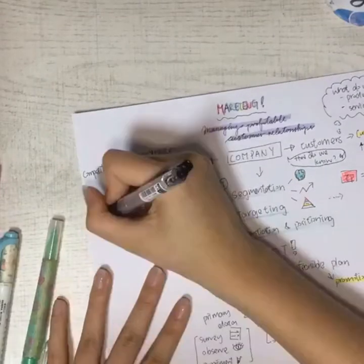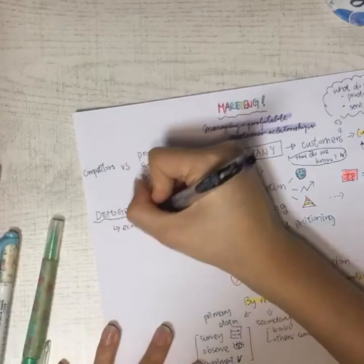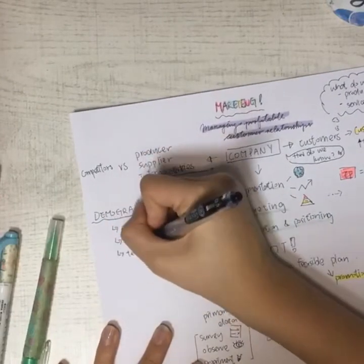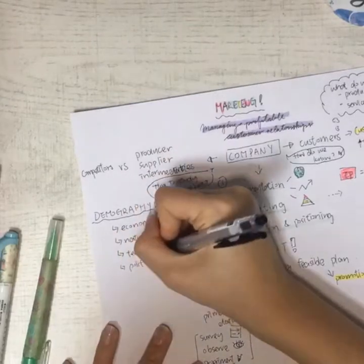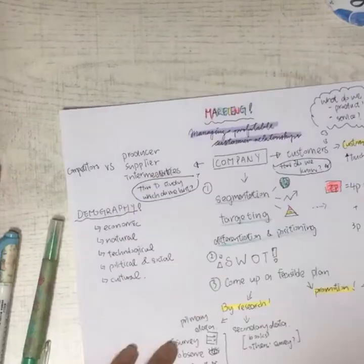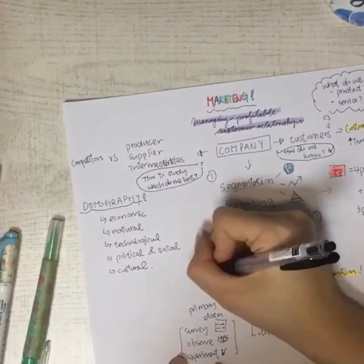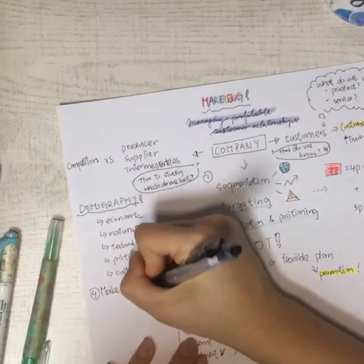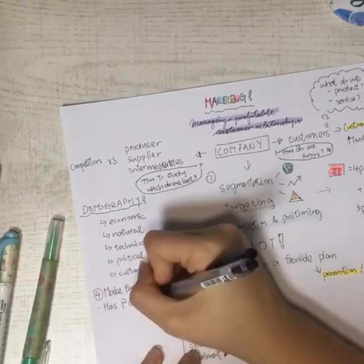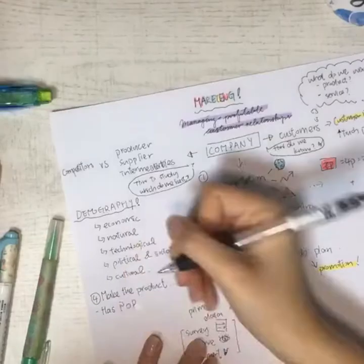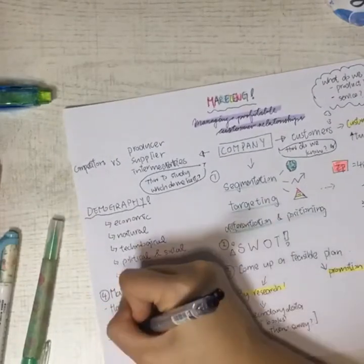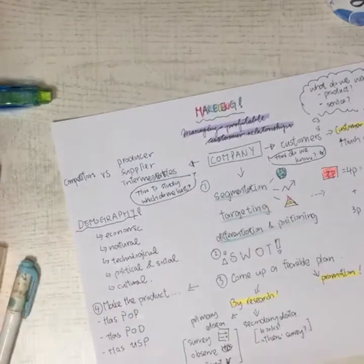Now we have to talk about the customer side, right? Time to talk about the other side. That is, before the product had reached a company, they've actually been through a few procedures from the producer, to the supplier, to the intermediaries. So how do we study how the product fits the customer the best? Of course, we will need demography. From the economic side, the natural side, to the technological side, political and social, and eventually the cultural side, we can study the demography.